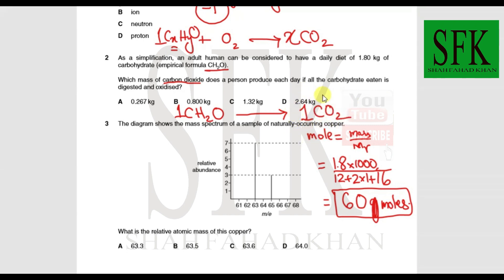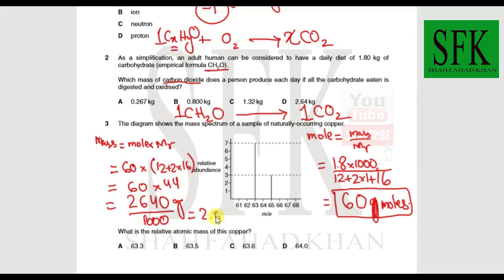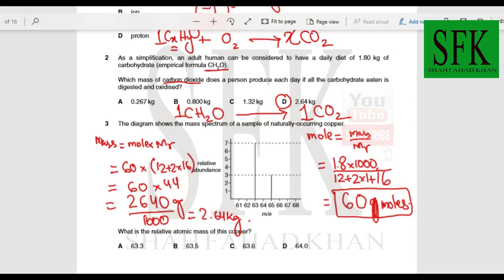Since the mole ratio is 1:1, convert 60 moles of CO₂ to mass using mass = moles × Mr. The Mr of carbon dioxide is 12 + 2(16) = 44. So 60 × 44 = 2640 grams. Converting to kg gives 2.64 kg. The answer is option D.